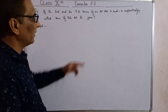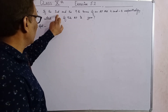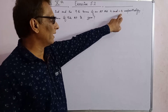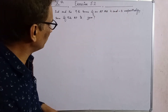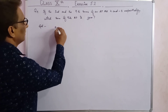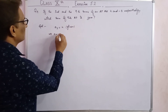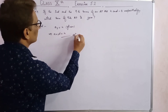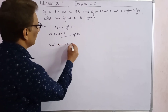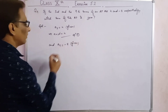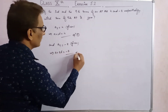Question 9: If the 3rd and 9th terms of an AP are 4 and minus 8 respectively, which term of this AP is 0? Given: a3 equals 4, which implies a plus 2d equals 4 — equation 1. And a9 equals minus 8, which implies a plus 8d equals minus 8 — equation 2.